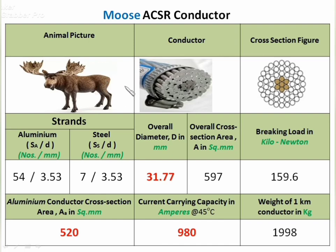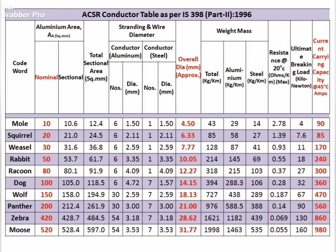Moose ACSR is a type of deer conductor. It has 54 aluminium strands, 520 mm² area, 980 A current capacity, and weight of approximately 2000 kg per km. This is the IS:398 ACSR table — you can see the row of Dog conductor along with other information such as stranding, wire diameter, weight, mass, resistance, and strength. Important columns are highlighted; you can pause and see each row.